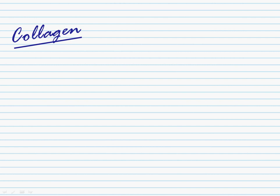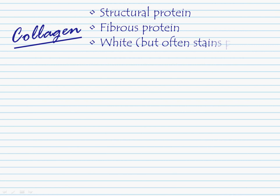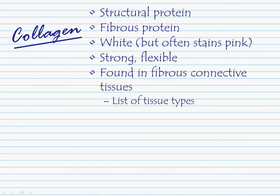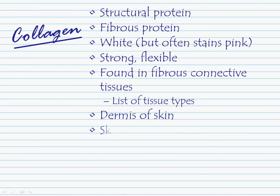The running concept list is simply a list of terms or concepts that are related to one another. Looking at this example, collagen is a protein. As you study Human Anatomy and Physiology, you figure out that it's a structural protein, a fibrous protein — it's white but often stains pink, it's strong and flexible. A little later, you learn about the different connective tissues collagen is found in, and you list out those different tissue types.